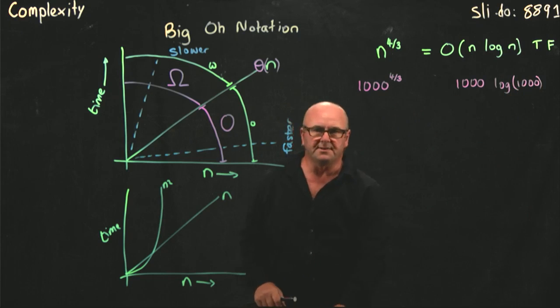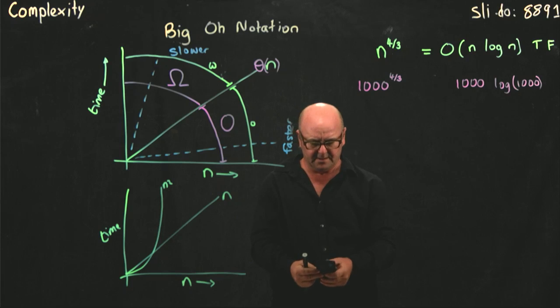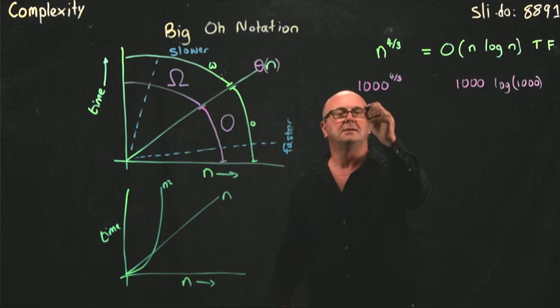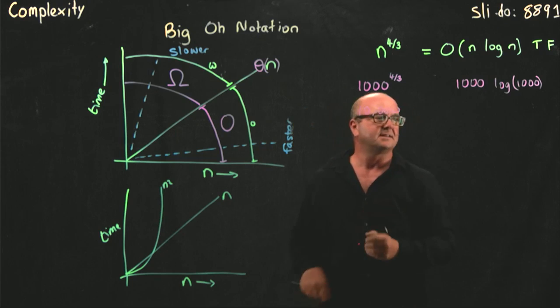And calculate what 1,000 to the 4 thirds is. And then calculate what 1,000 times log of 1,000 is. And so, what's 1,000 to the 4 thirds? We get our calculator.